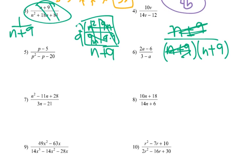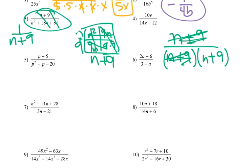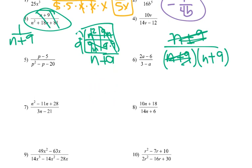On question 5, it's a similar situation. Using that area model, you'd come up with p minus 5 times p plus 4. So the p minus 5 would be eliminated and we'd end up with 1 over p plus 4 for our answer.